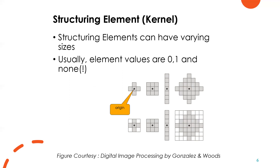Coming to the structuring element, which is considered one of the main preliminaries of morphological image processing: structuring elements used in morphology are meant to have varied sizes, and the usual element values in any structuring element are 0 and 1, and sometimes none. For thinning applications, other values are also possible other than 0, 1, and none. Sometimes empty spots — as seen in the picture, the dot part represents the origin, whereas the empty spots in structuring elements are referred to as don't care conditions.